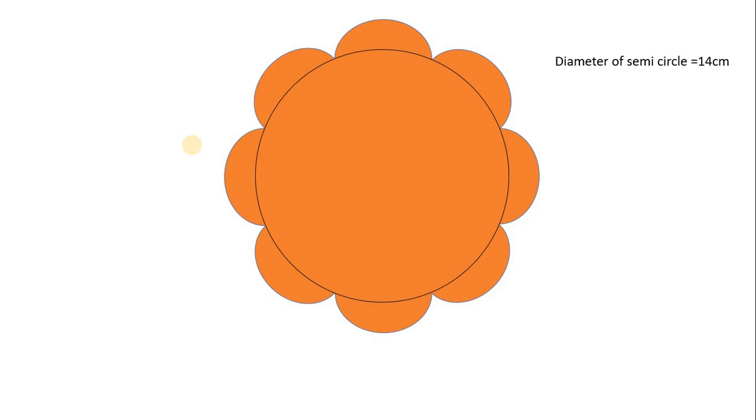It looks like a flower. Then you have to find the area of this flower. The question is: there is one circle and eight semicircles bounded by the biggest circle. If the diameter of the semicircle is 14 centimeters, you have to find the area of that figure made by the semicircles and the biggest circle.